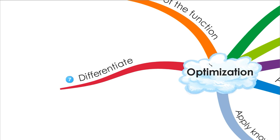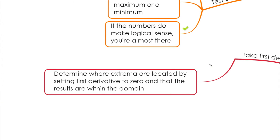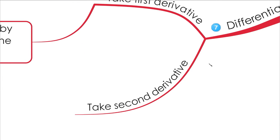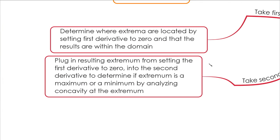Next, you're going to differentiate. Take the first derivative and find the extremum by setting the first derivative to zero, making sure the results are within the domain. Then take the second derivative and plug in the critical values to check concavity. If you get a positive number, it's concave up — you have a minimum. If it's negative, it's concave down — you have a maximum.